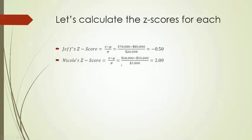Whereas Nicole's z-score, her salary minus the mean divided by the standard deviation in Albany, which is 60,000 minus 50,000 divided by 5,000. She has a z-score of two. So she's two standard deviations above the mean. So we see that just here Nicole is better off because she's further away from the mean than Jeff.